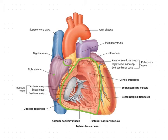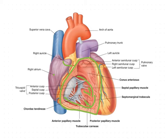The inflowing part is rough due to the presence of muscular ridges. These elevations and depressions — the muscular ridges — are called trabeculae carnae. This part develops from the primitive ventricle of the heart tube embryologically.